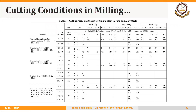Just like in turning and drilling, we have reference tables. For a certain workpiece-cutter material combination using certain types of cutters, we can see the values for feed and speed — both optimum and average values. The feed is in thousandths of an inch, so it is 0.007, and cutting speed is in feet per minute.